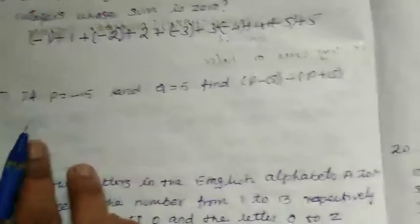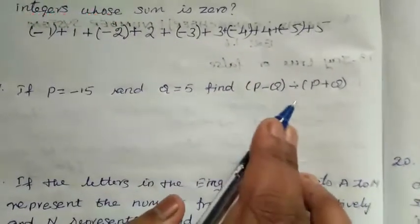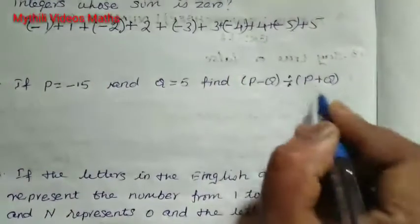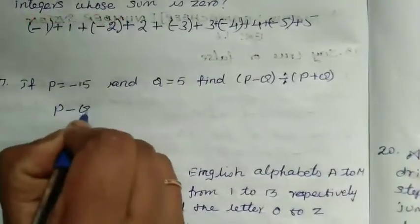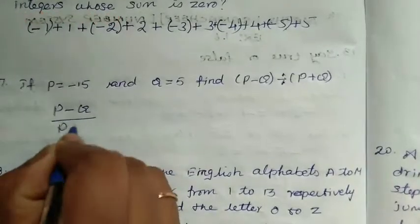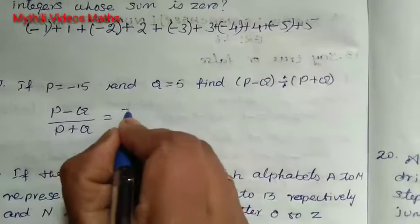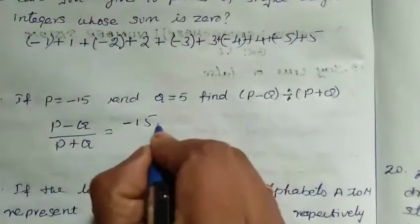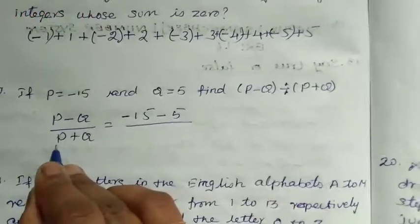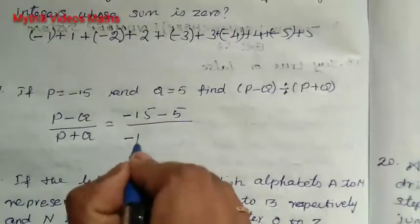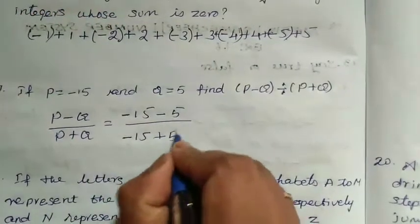17th sum: if p equals minus 15 and q equals 5, find p minus q divided by p plus q. We write the expression and substitute: instead of p we write minus 15 and instead of q we write 5, both in numerator and denominator.